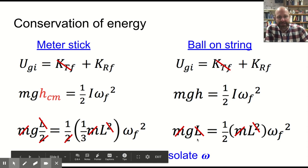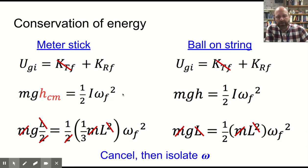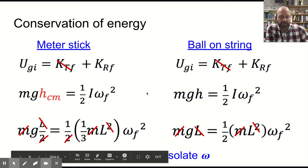Whereas on the ball side, that distance it falls is going to be L. And then when it comes to the one-half I omega final squared, I is going to be one-third ML squared. That's a stick rotating about one end.